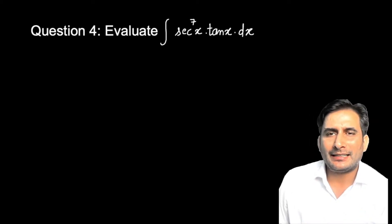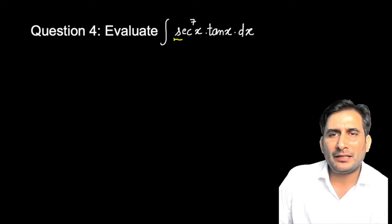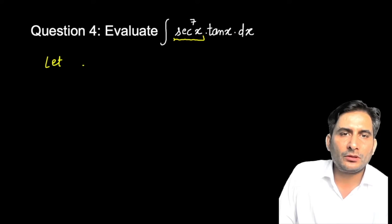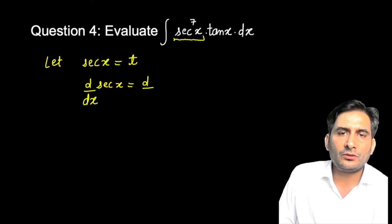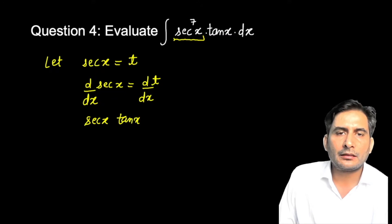Sec x ki power hai, so we need to eliminate this. Let's take sec(x) = t. If I differentiate this, sec(x) with respect to x, then d(sec x)/dx with respect to x gives us the differentiation of sec(x), which is sec(x) tan(x). If I move dx to the right side...